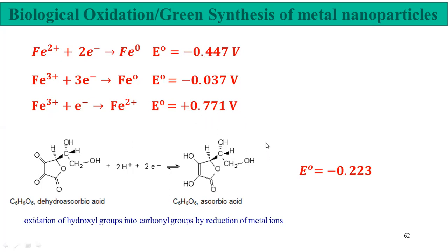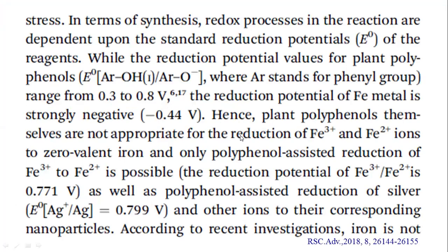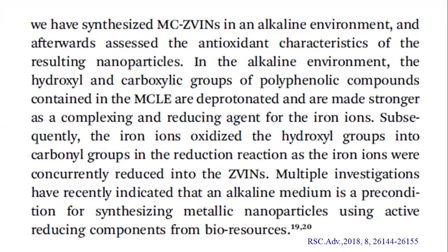If you want to change the pH of this half-cell, you can calculate the potential using the Nernst equation by substituting the appropriate value of hydrogen ion concentration. By changing the pH of the solution, you can change the potential of this half-cell and further determine the spontaneity of these metal ion reductions in the presence of vitamin C or ascorbic acid at different pH levels. This completes the explanation — see you in the next class.